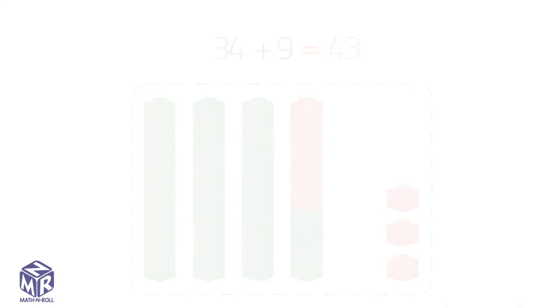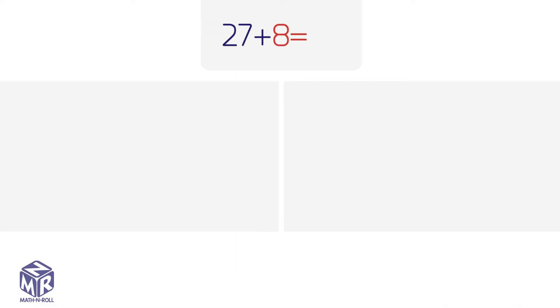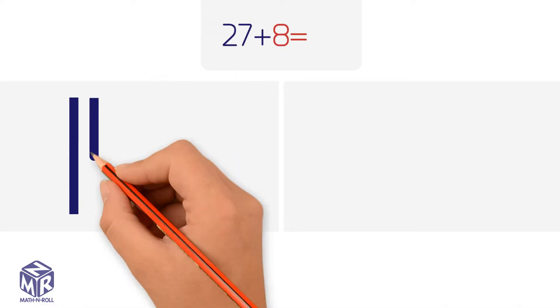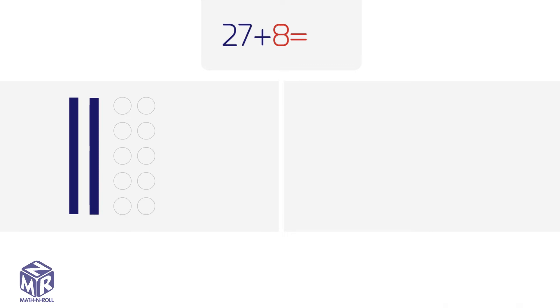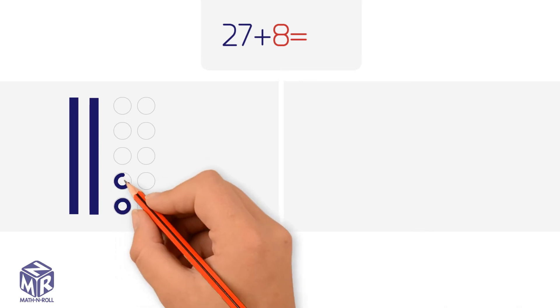Let's try another example. 27 plus 8. Let's draw it out. 27 has two 10s and seven 1s.